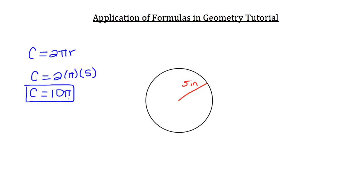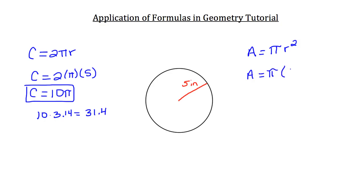Your teacher may ask you to convert pi to a decimal: 10 times 3.14 is 31.4 inches. For the area of this circle, area equals πr²: that's π times 5 squared. Since 5 squared is 25, the area is 25π square inches.